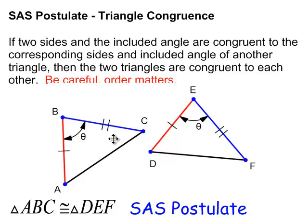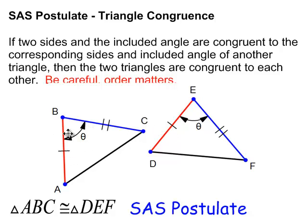Now we're going on to the side-angle-side postulate, where if two sides and an included angle — meaning order matters: a side, then an angle, then a side — if those two sides and the included angle are congruent to the corresponding sides and included angle of another triangle, then the two triangles are congruent. So AB is congruent to DE, there's an included angle at B and at E, and BC is congruent to EF, making those two triangles congruent by the side-angle-side postulate.